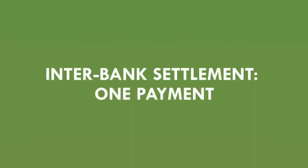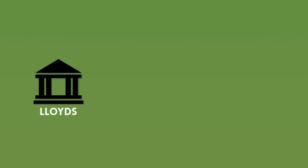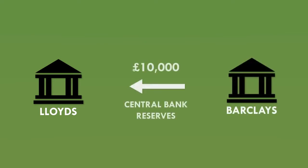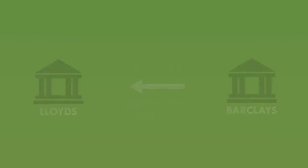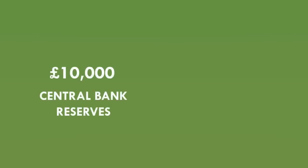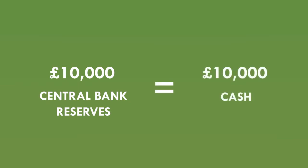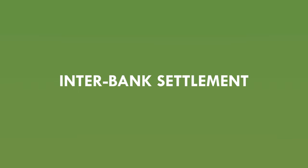But there's a small complication. If Robert goes and spends the new bank-created money at a shop that banks with Lloyd's, then Lloyd's will want to see £10,000 of real money from Barclays. Barclays would need to transfer £10,000 of central bank reserves to Lloyd's to settle the transaction. This process of banks making payments between themselves is called interbank settlement, and it's crucial to understanding how banks have been able to gain control over the entire money supply.